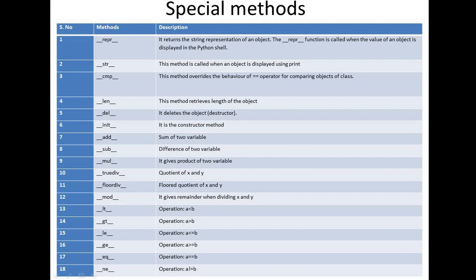Now let us discuss some more special methods. We have already discussed three special methods: init, string, and representation methods. Apart from these, we will look at what other special methods are available in Python object-oriented programming. The representation method is called when the value of an object is displayed in the Python shell — when you want to see the value of a particular object, you can call this representation method.